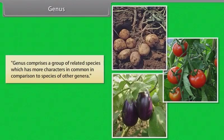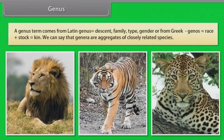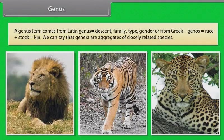Genus comprises a group of related species which has more characters in common in comparison to species of other genera. The term genus comes from Latin meaning descent, family, or type, and from Greek genos meaning race or stock. We can say that genera are aggregates of closely related species.